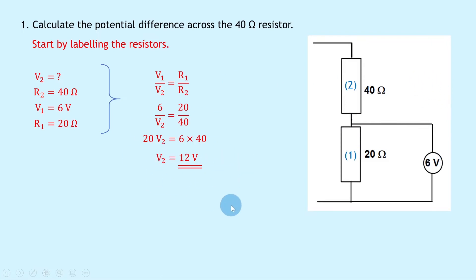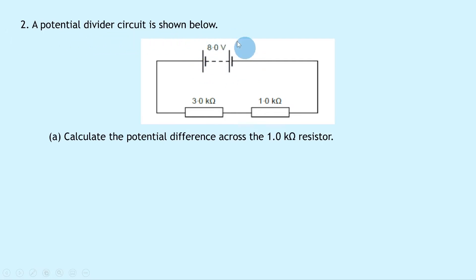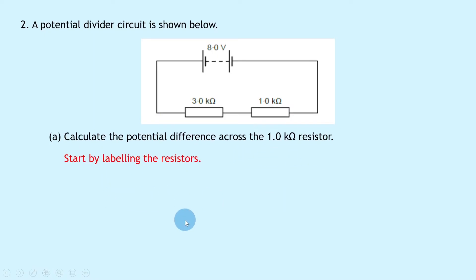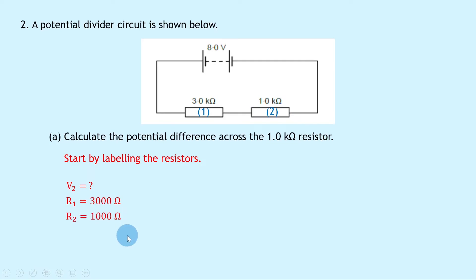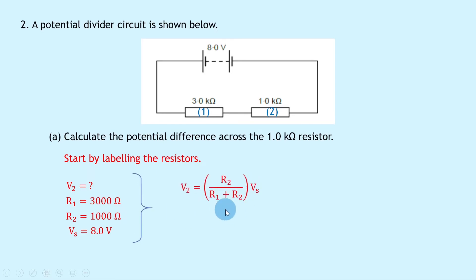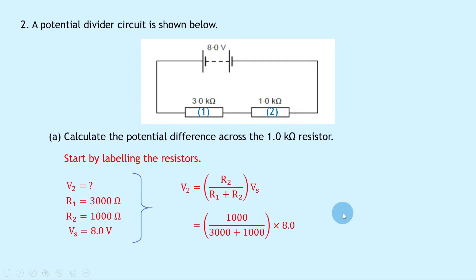Question 2 shows a potential divider circuit with an 8 volt battery, a 3 kilohm resistor in series with a 1 kilohm resistor. Part A asks to calculate the potential difference across the 1 kilohm resistor. Labelling the resistors: R1 is 3 kilohms (3000 ohms), R2 is 1 kilohm (1000 ohms), and VS is 8 volts. Using the potential divider formula — V2 equals R2 over (R1 plus R2) times VS — substituting gives 1000 divided by (3000 plus 1000) times 8.0, giving a final answer of 2 volts.